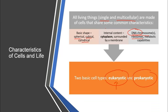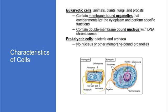Eukaryotic cells are like updated versions which carry extra structures and extra organelles inside, while prokaryotic cells are more primitive. Eukaryotic cell examples are animals, plants, fungi, and protists — they contain membrane-bound organelles that compartmentalize the cytoplasm and perform specific functions. They also contain a double-membrane-bound nucleus, a specifically designed structure inside which the genetic material — DNA or chromosomes — stays.